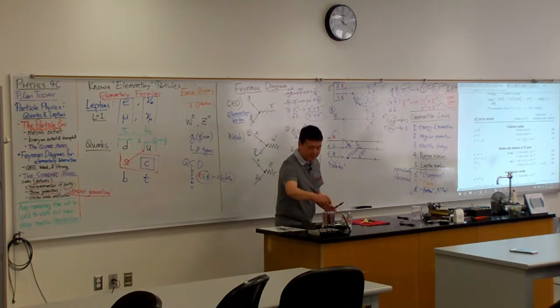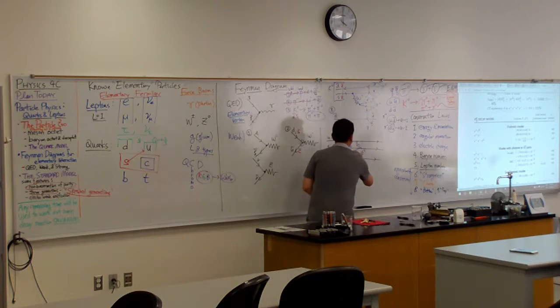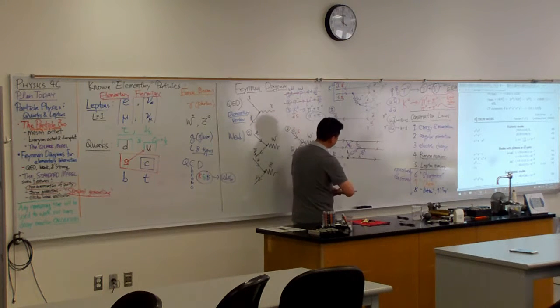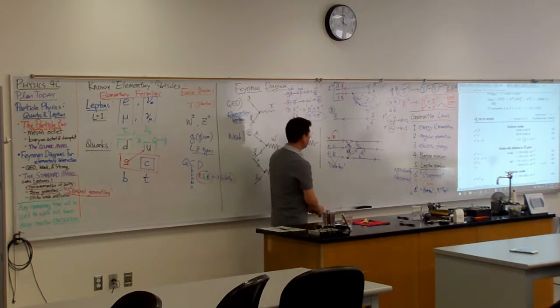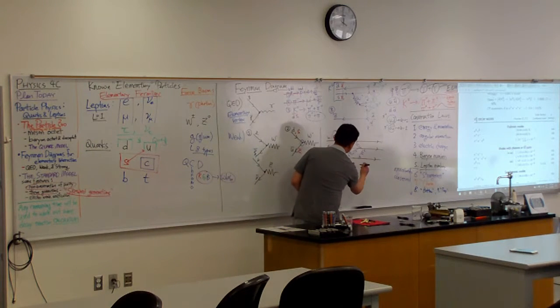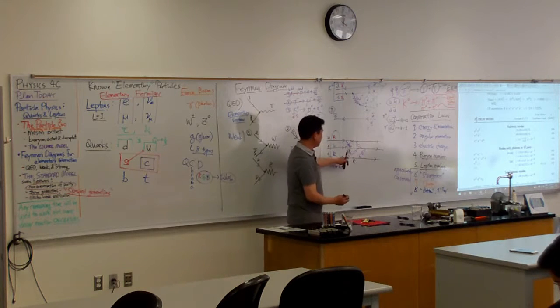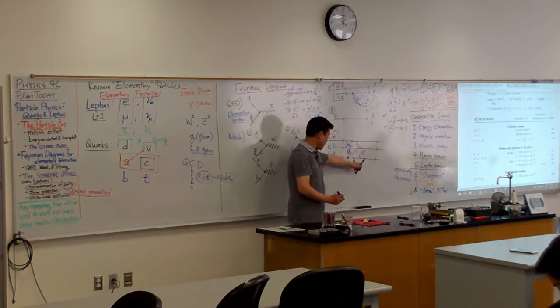So if I have blue quark coming in, it would emit, for example, blue and I don't know, let me just get an example of anti-red gluon, then this quark going out here would now be red. Having gotten rid of red, it now has red color.